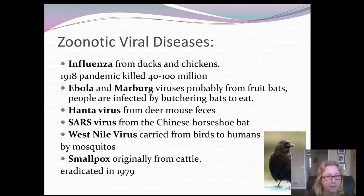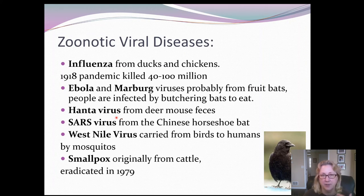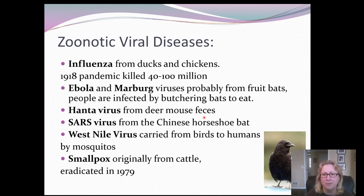Ebola and Marburg are not endemic in the human population because years go by with no one being infected. Hantavirus periodically breaks out here and there, but luckily it is not transmissible human to human. People get it from mice — specifically from inhaling powdered mouse feces, usually in cabins where there have been a lot of mice — and it can cause a deadly respiratory illness.